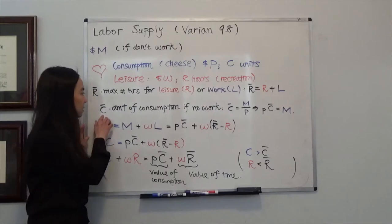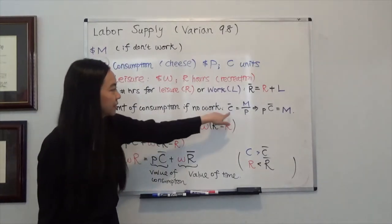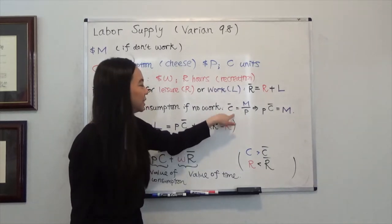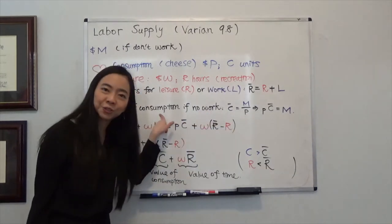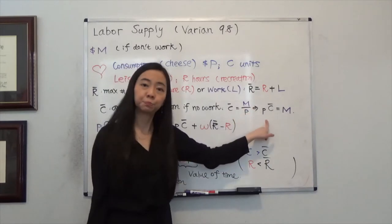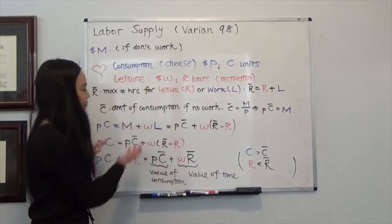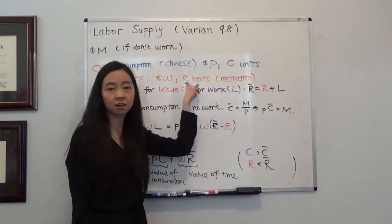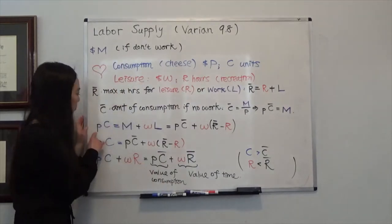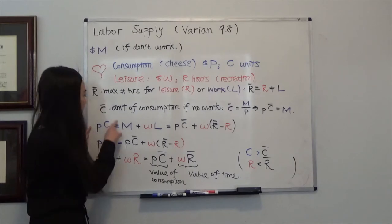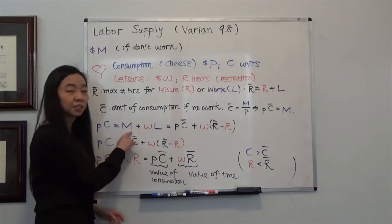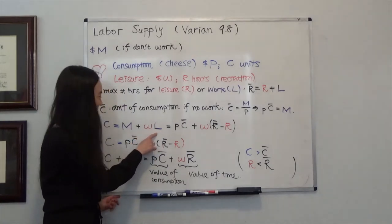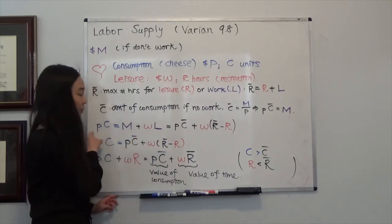Now let's also assume that C bar is the amount of consumption if you choose not to work. Therefore C bar equals M — the money your parents gave you — divided by P, the price of cheese. You can rewrite M as P times C bar. So our budget equation is: P times C — the amount of cheese you consume times the price — equals M plus W times L, your parental income plus your work earnings. So M plus W times L equals P times C.